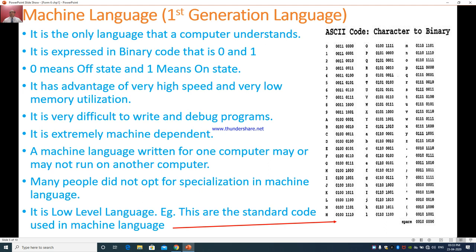It is very difficult to write and debug programs because you can understand well with the combination of zeros and one. This is also called as binary digits, that is combination of zero and one. If you type zero, that means 0011 0000. This is the combination. If you want to type one, according to machine, 0011 0001.